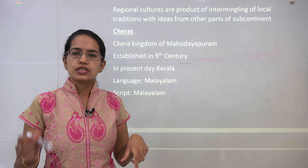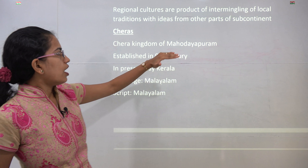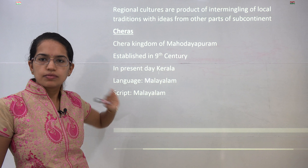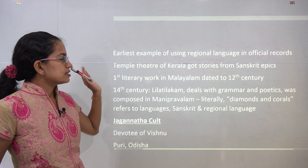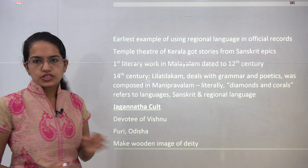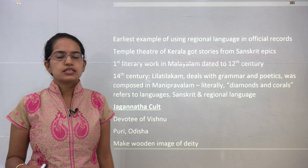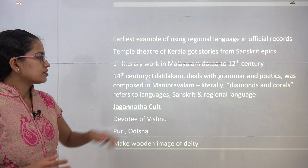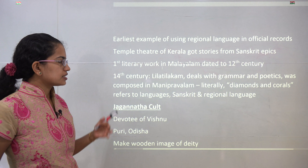Cheras was a kingdom of the southwest part of India, which is present-day Kerala. It was established in the 9th century and was known as the Chera kingdom of Mahodayapuram. The language in this kingdom was Malayalam. The first literary work of Malayalam started in the 12th century, and Malayalam was among the earliest examples of using regional languages in official records. The temple theatre of Kerala got many stories from Sanskrit epics but translated them into Malayalam. The 14th century work known as Leela Tilakam deals with grammar and poetry and was composed in Manipravalam, meaning the diamonds and the corals, talking about language, literature and regional culture.